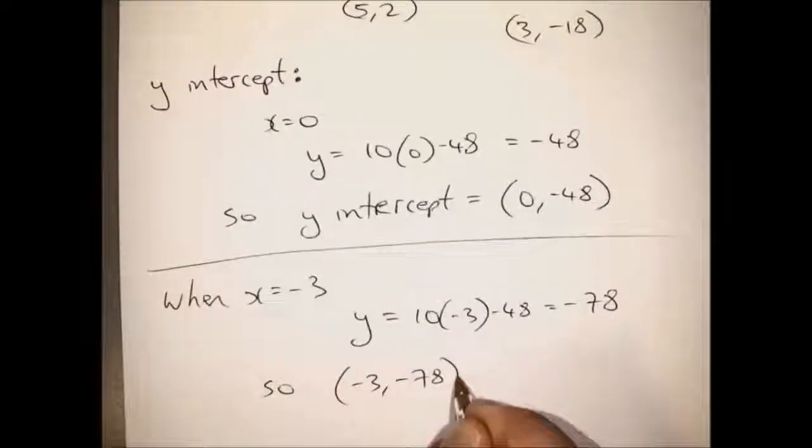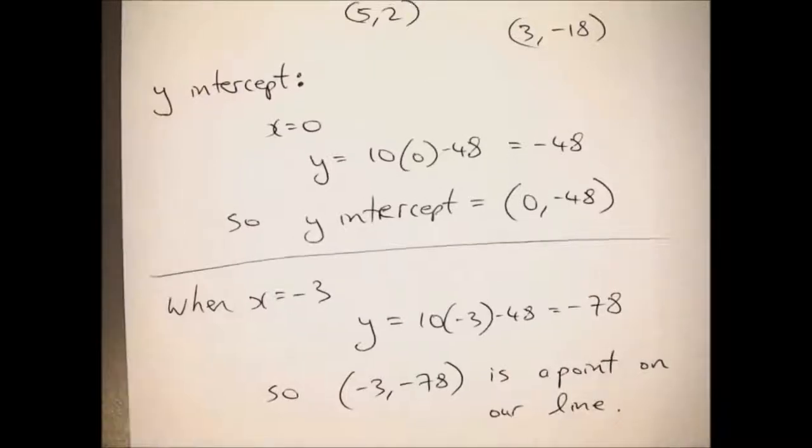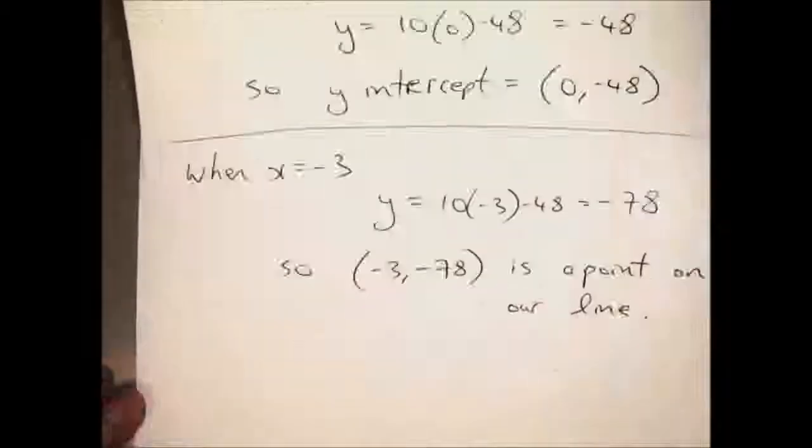Also let's get a point, what's happening when x equals minus 3? Well the y-value will be minus 78, and that's also a point on our line.